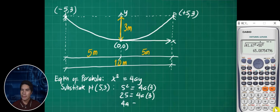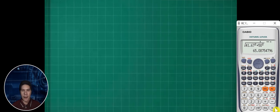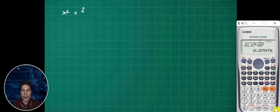We have 25 equals 4a times 3. The 4a or the latus rectum will be 25 over 3. This is our latus rectum. Therefore, the equation of our parabola is x squared equals 25 over 3 times y.